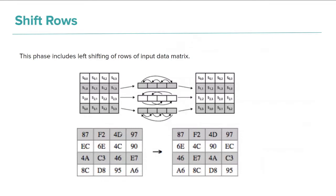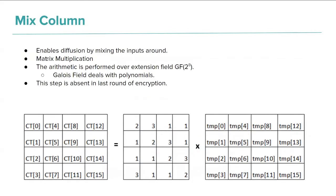The ShiftRows phase involves left-shifting the rows of the 4×4 state matrix. The first row is not shifted at all. The second row is circularly shifted one position to the left. The third row is shifted two positions to the left, and the fourth row is shifted three positions to the left — equivalently one position to the right.